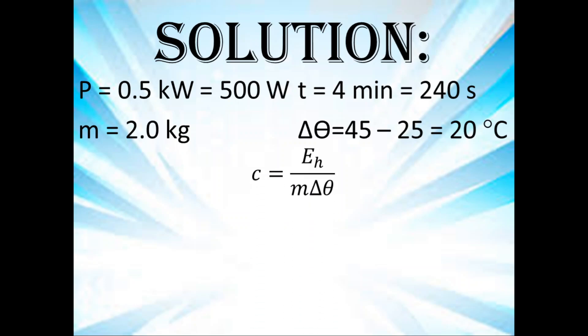So our formula is the heat energy is equal to mass times specific capacity times change in temperature. When we rearrange that to make the specific heat capacity the subject of the formula, we have c is equal to heat energy divided by mass times change in temperature. The heat energy used here is the same as the electrical energy used by the appliance.